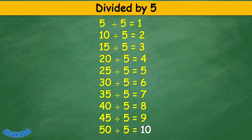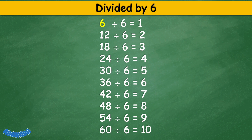Divided by 6: 6 divided by 6 equals 1, 12 divided by 6 equals 2, 18 divided by 6 equals 3, 24 divided by 6 equals 4, 30 divided by 6 equals 5, 36 divided by 6 equals 6, 42 divided by 6 equals 7, 48 divided by 6 equals 8, 54 divided by 6 equals 9, 60 divided by 6 equals 10.